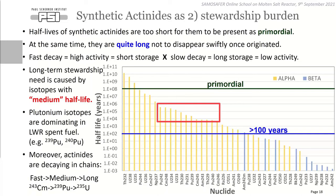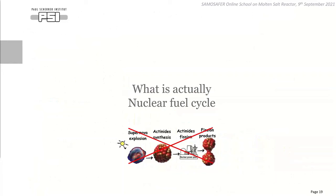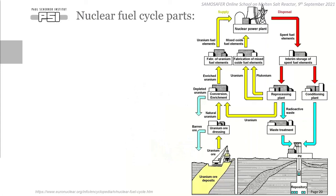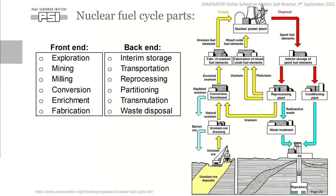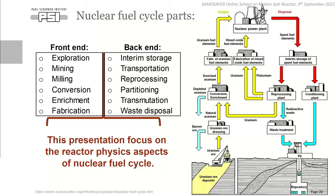Synthetic actinides are at the same time a stewardship burden because they have half-lives too short to be primordial, but once generated, long enough not to disappear swiftly. With radioactive materials: fast decay means high activity but short storage time; slow decay means long storage time but low activity. The worst case is medium half-lives — the long-term stewardship burden. From spent LWR fuel, plutonium isotopes typically cause the quoted 100,000 years storing time before reaching natural radiotoxicity levels. Synthetic actinides also decay in chains, making radiotoxicity evaluation non-straightforward. Now let's talk about the nuclear fuel cycle.